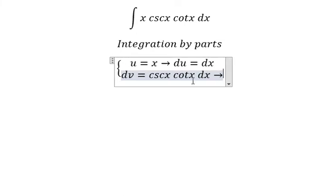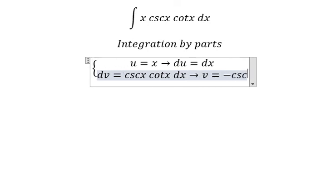The integration of this one, we have v equals to negative cosecant of x.